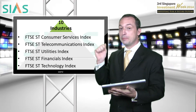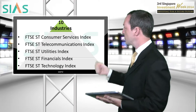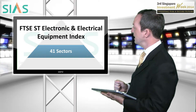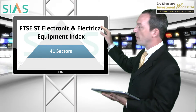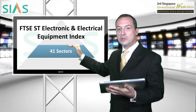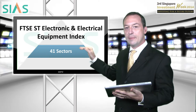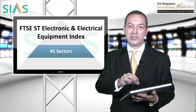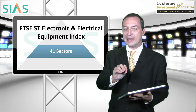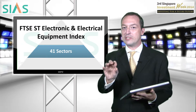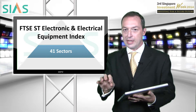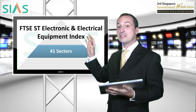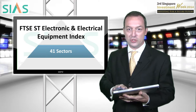Let's now focus on this particular index, which is the FTSE ST Electronic and Electrical Equipment Index. You will find this index further towards the bottom of the pyramid among the 41 sectors. So by focusing on this index, you are already getting very specific in terms of the types of industries and types of businesses that the companies in this index are into.